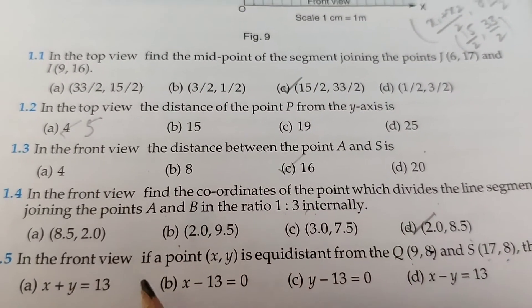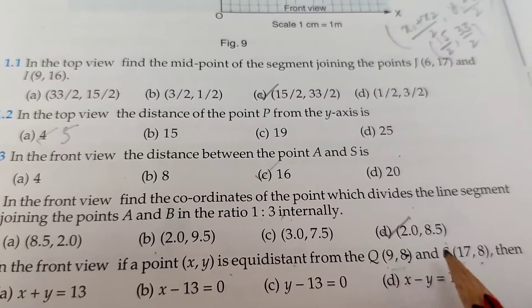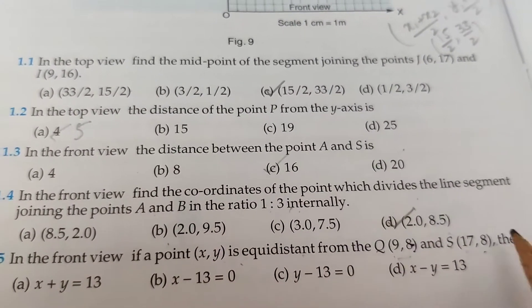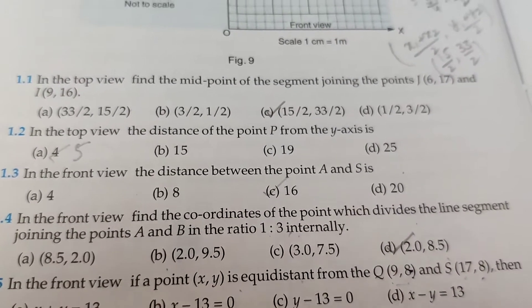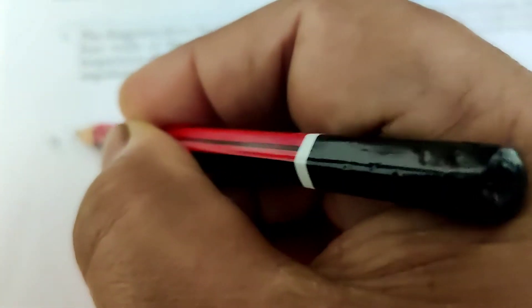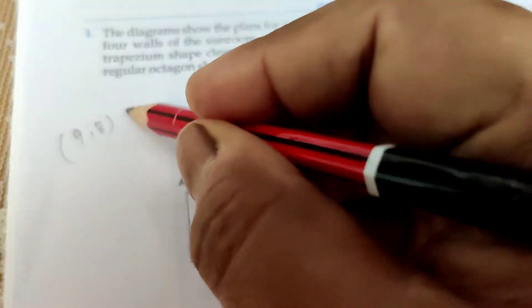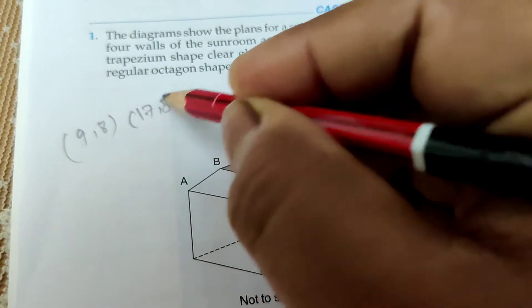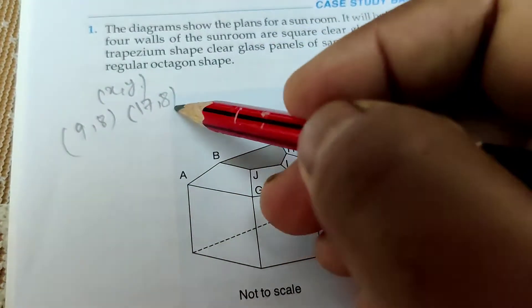The last question: In the front view, if the point (x,y) is equidistant from (9,8) and (17,8), then find the equation. A point (9,8) and (17,8) are equidistant from (x,y). The y-coordinates are the same.